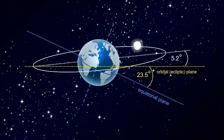As we already know, Earth's equatorial plane and ecliptic plane are at an angle of 23.5 degrees with each other. The direction of the Moon's orbital plane, indicated by a dotted white line, is at a 5.2 degree angle with respect to Earth's ecliptic plane.